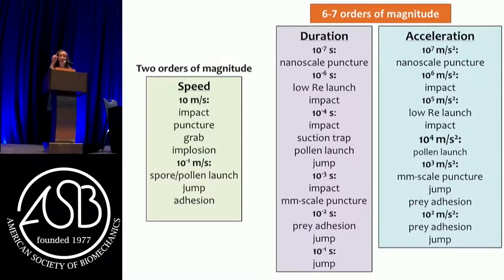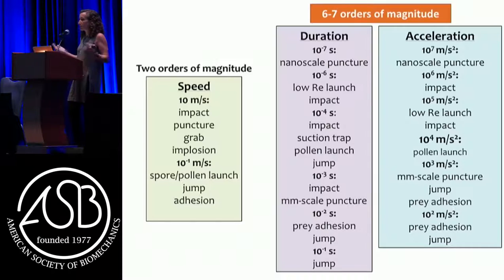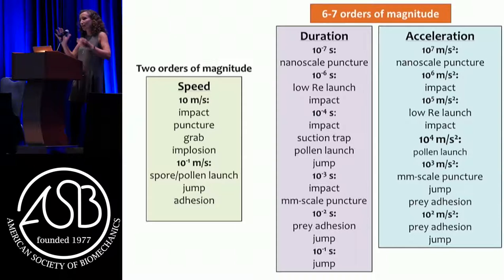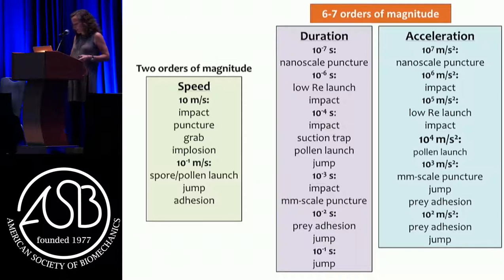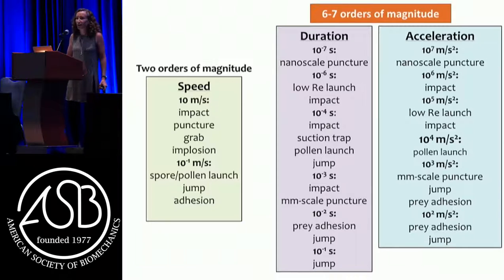When we look at what functions these extremes serve: at the top is nanoscale puncture, the stinging needle of a jellyfish puncturing at the nanoscale. We see low Reynolds number launching, impacts, suction traps, pollen launching. As we get toward the bottom, we reach the low end of impulsive systems, which is jumping — that one big jump. What is fast is probably not what we've often thought about it, and a paper on cheetah running dynamics that came out later actually largely focused on why cheetahs aren't that fast.